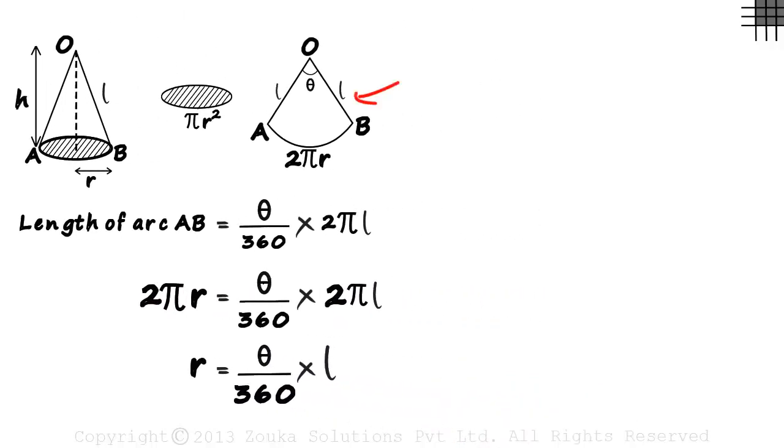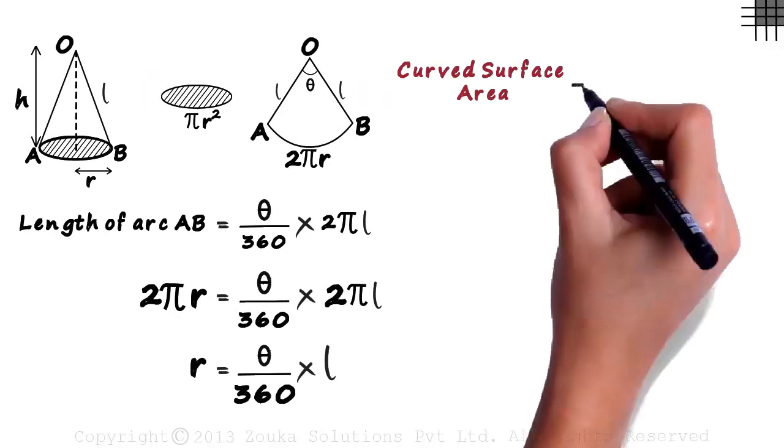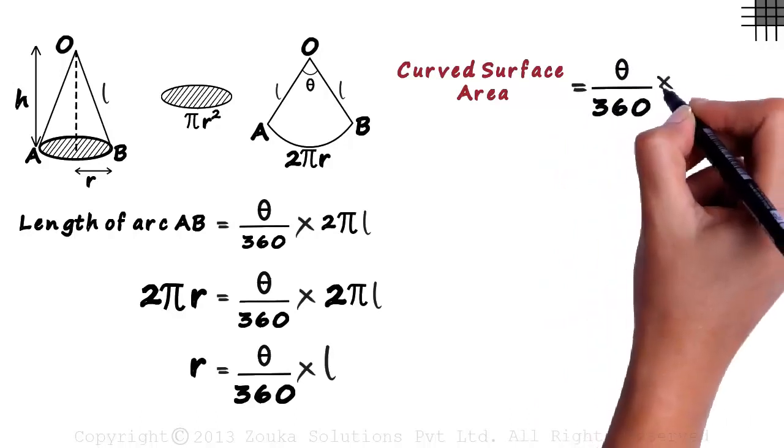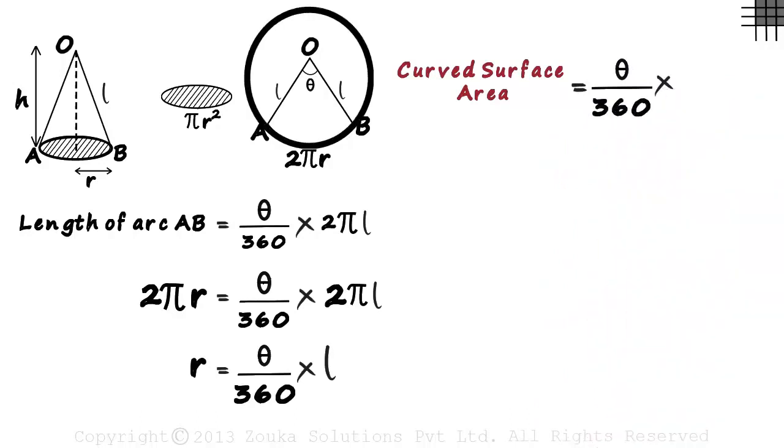The area of this sector will be the curved surface area of this cone. The area of this sector will equal theta by 360 multiplied by the area of the circle with O, A and O, B as the radius. And that will be pi L squared as L is the radius of this circle.